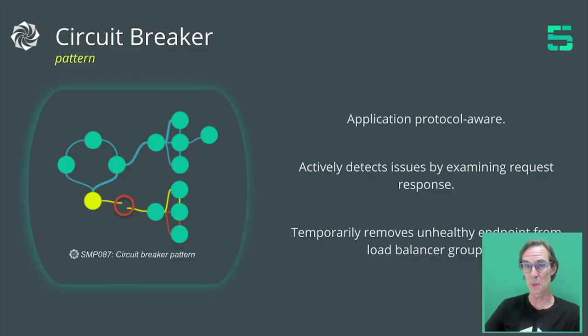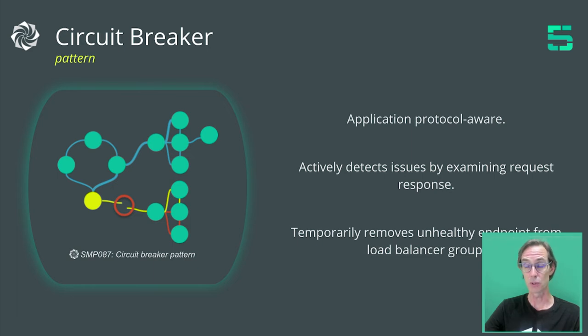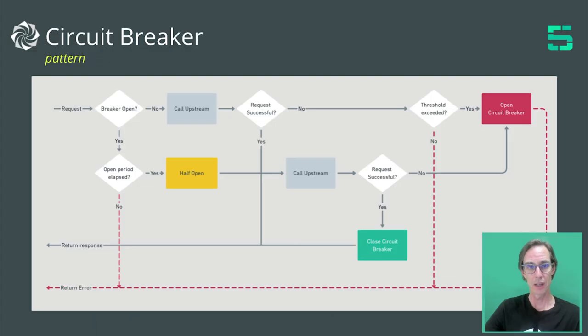We've just seen another demo showing how we can use Meshery to both do that exploratory configuration around our system, and also do methodological performance testing to ensure we're confident the levels we've set for our retry are appropriate. But with a lot of the patterns you apply in architecture — and specifically in service mesh — they don't necessarily exist in isolation. A common pattern you would apply alongside a retry is the circuit breaker.